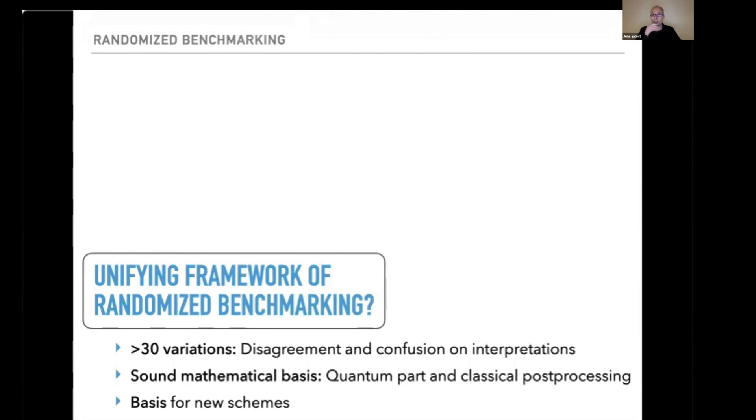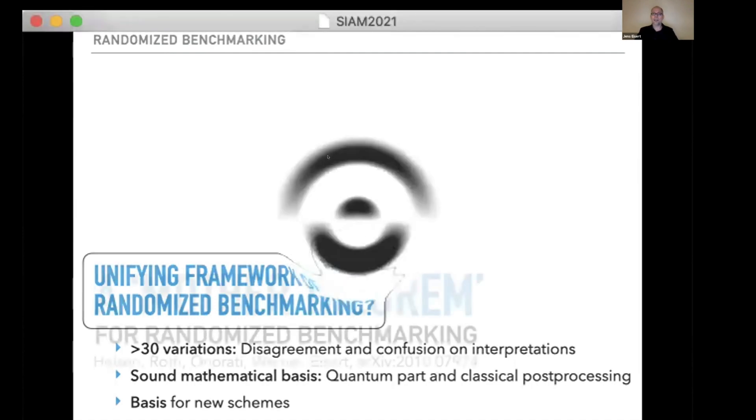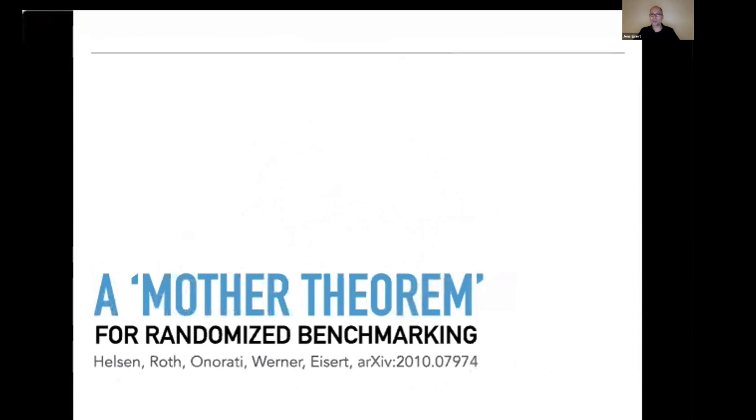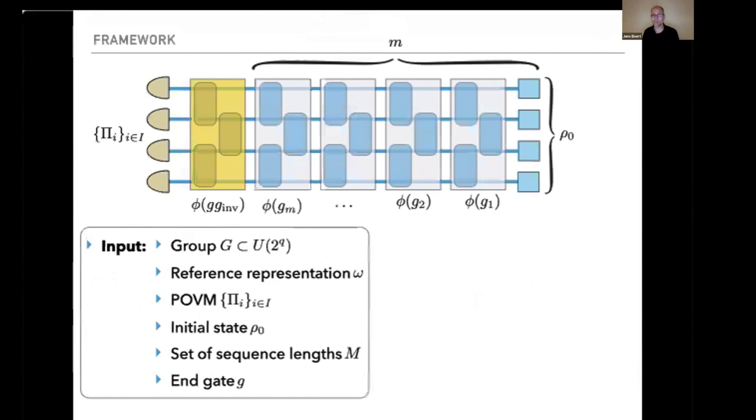What are the ingredients to a mother theorem? What is a randomized benchmarking protocol? It starts with input data: we need a group as a subgroup of U(2^q) for a q-qubit system in the lab, the paradigmatic example being the Clifford group, but you can take the Pauli group, dihedral group, or some exotic group of your liking. Then you have to pick a notion of idealness somehow.